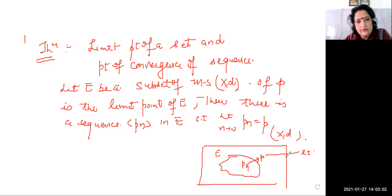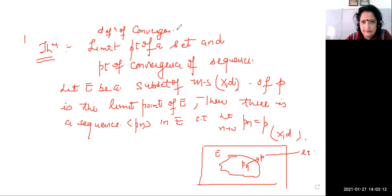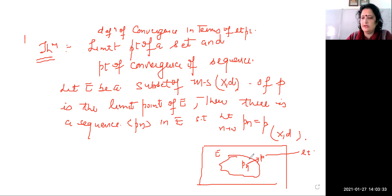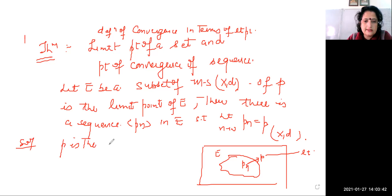In other words, we can say that by the definition of convergence, the limit n tends to infinity pn is equal to p. We have given that p is the limit point of E.